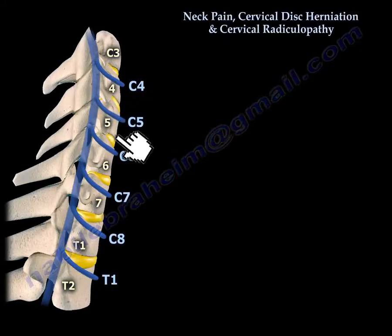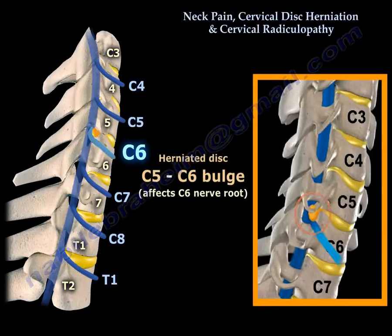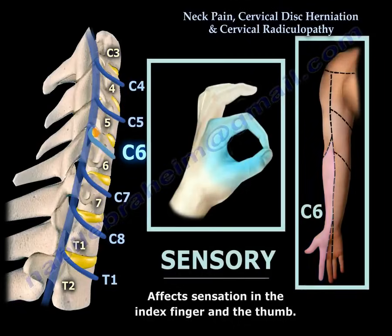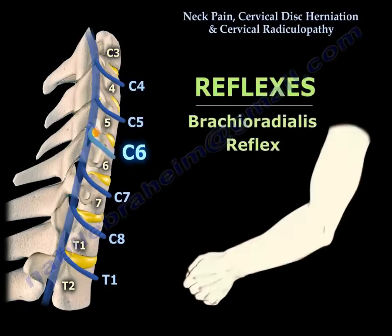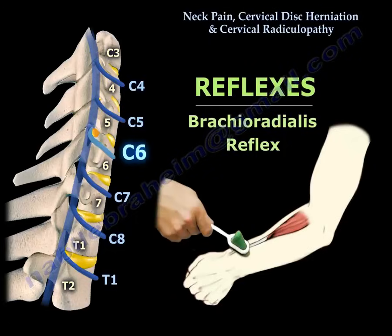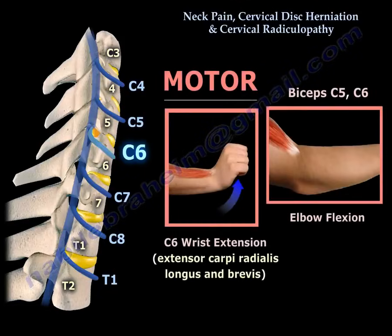A C5-C6 bulge or disc herniation will definitely affect the C6 nerve root. It will affect sensation at the index finger and the thumb, and you can see in the diagram the area involved in C6 sensory deficit. The C6 reflex is the brachioradialis reflex. As regards the motor, C6 is wrist extension — the extensor carpi radialis longus and brevis — and also elbow flexion, shared with C5.